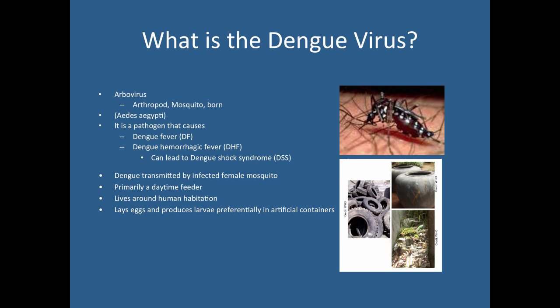Dengue mosquitoes live around human habitation. Unlike diseases associated with forests or river areas, dengue virus mosquitoes tend to live more in urban areas. They lay eggs and produce larvae preferentially in artificial containers — you won't typically see them in rivers or lakesides, but in small containers such as tires, pots, trash piles, old cups — anything that can hold small amounts of water, which gives seclusion from predators.